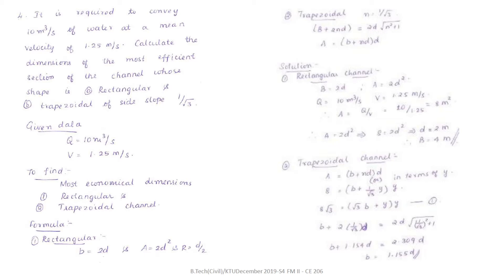The formula for a rectangular channel — the most economical condition is b = 2d, meaning the width of the rectangular channel must be twice the depth of the channel. Area should equal 2d², and the hydraulic mean depth R should equal d/2, that is half the depth of water.